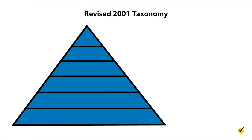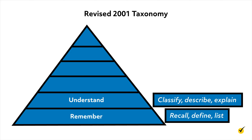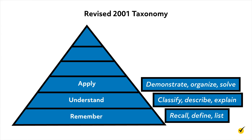The lowest level on Bloom's taxonomy, remember, focuses on recalling facts and concepts. Verbs in this level include recall, define, and list. The understand level focuses on explaining ideas and concepts. Verbs include classify, describe, and explain. The apply level focuses on applying knowledge to new situations. Verbs include demonstrate, organize, and solve.